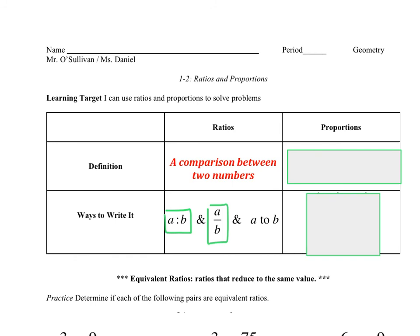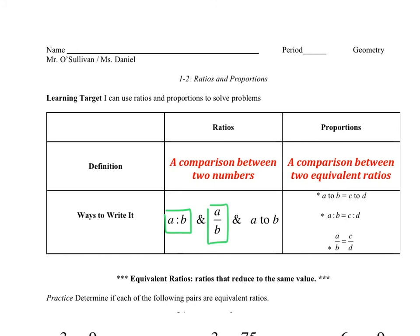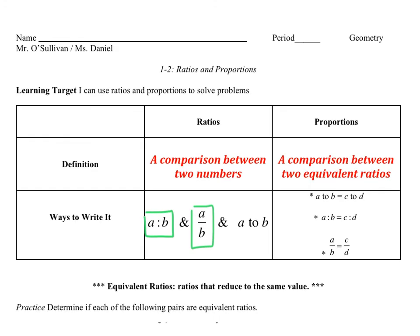Now on to the definition of a proportion. Well, a proportion is a comparison between two equivalent ratios. We're gonna be going over that very shortly. An equivalent ratio is simply the ratios that reduce the same value. Our next way of writing it is going to be these. And I'm gonna zoom in so you can see.